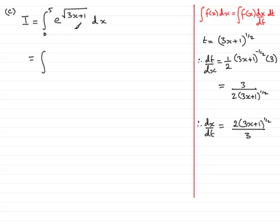but we have f of x, so that is going to be e to the square root of 3x plus 1. In place of dx, we're going to write dx dt, so that's going to be this value here, 2 bracket 3x plus 1, then to the power of 1 half, over 3, and then we have the dt on the end.